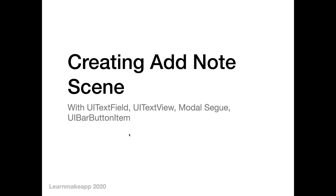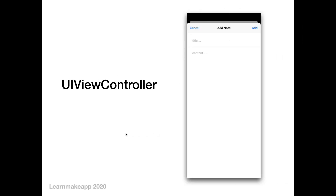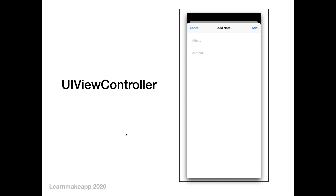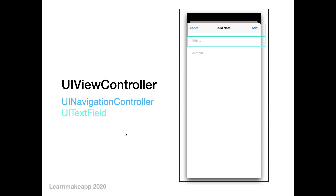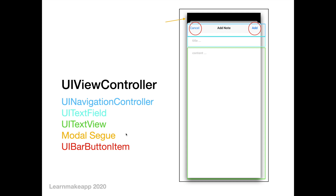Welcome back to Learn Mac App. In this video we're going to learn about how to create an Add Note scene in our series. The scene we're going to build is a view controller embedded in a navigation controller, and for input we're going to use a text field and a text view. We'll display the view controller using a modal segue from bottom to top and add cancel and add actions using UI bar button items.